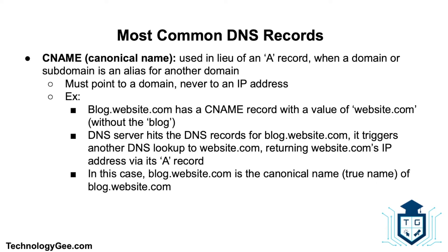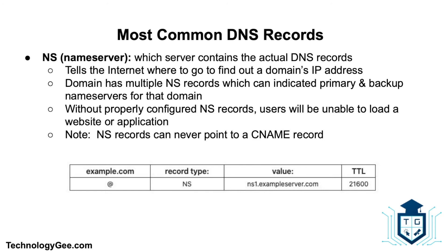The CNAME record, or canonical name, is used in lieu of an A record when a domain or subdomain is an alias for another domain. All CNAME records must point to a domain and can never point to an IP address. For example, if blog.website.com has a CNAME record with the value website.com, when a DNS server hits the records for blog.website.com it triggers another DNS lookup to find website.com, returning website.com's IP address via its A record — making website.com the canonical true name.